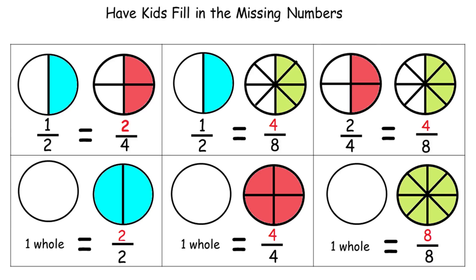In the next problem, we also see four parts filled in with green, so that numerator is also four. Moving down to the bottom, we have two blue parts filled in. The next one has four red parts filled in. And the next one has eight green parts filled in.